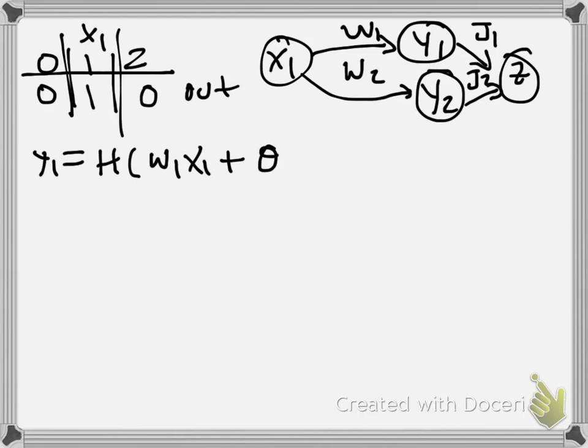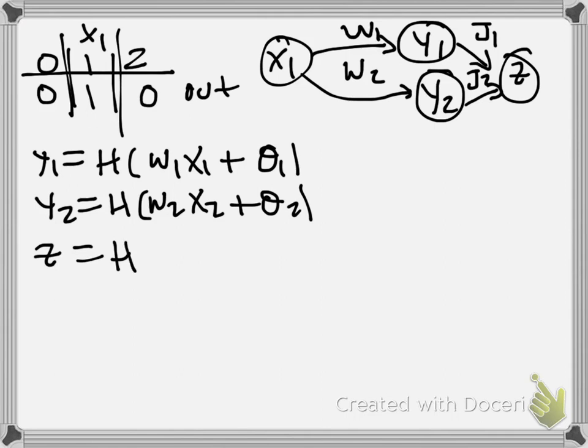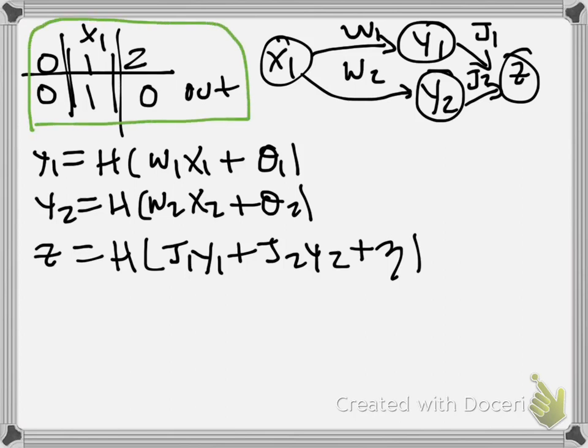Y1 equals H of W1 X1 plus theta 1 is the argument that goes into the Y1 neuron. Y2 takes as inputs W2 X2 plus theta 2. And then Z now is just a downstream neuron that takes J1 Y1 plus J2 Y2 plus we'll call it eta, will be Z's threshold. So how do we implement this operation that we want, this operation here, or a little classification of X1's possible inputs?